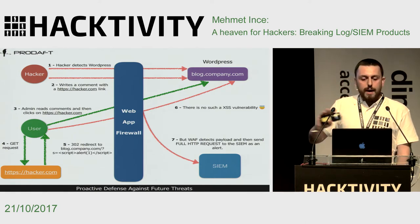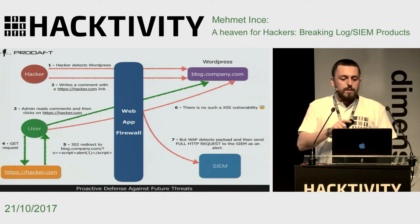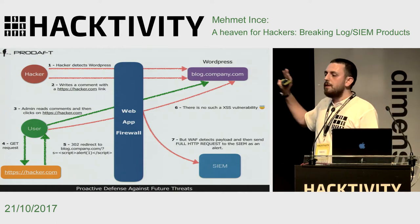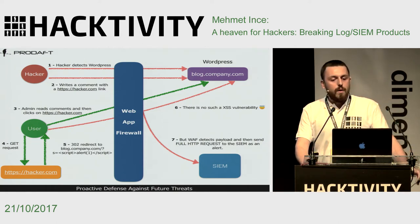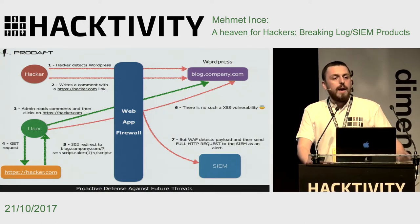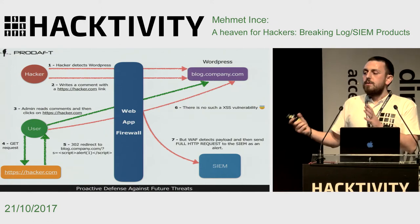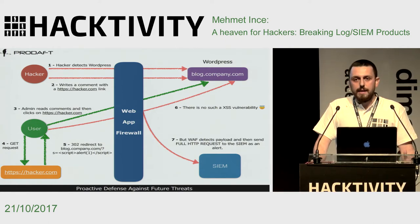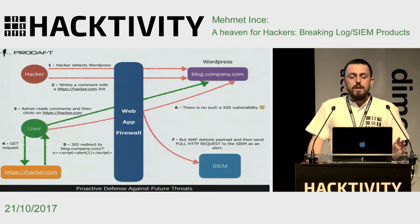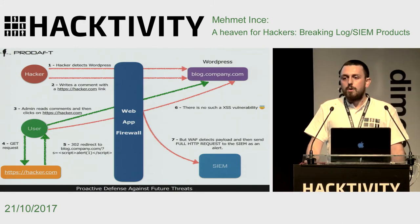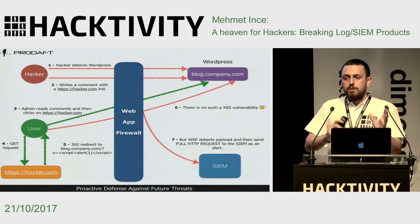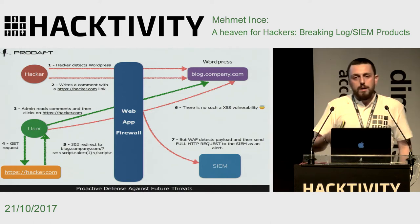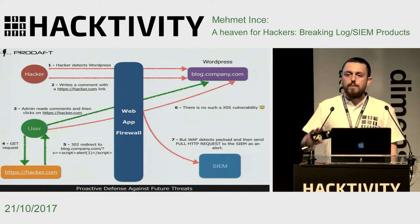We redirect the user back to blog.company.com with an S parameter containing one of the most famous cross-site scripting payloads. There's no actual vulnerability in the WordPress site, but the web application firewall detects this payload and sends the full HTTP request to the SIEM and log management products. If you access one of those products, you can see the full HTTP request including valid session cookies — we're forcing the user to share their session with the SIEM.